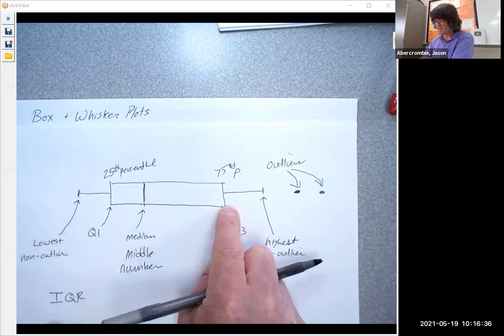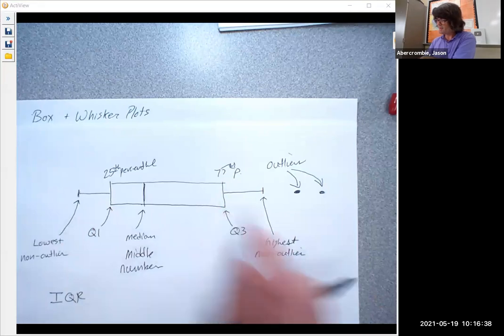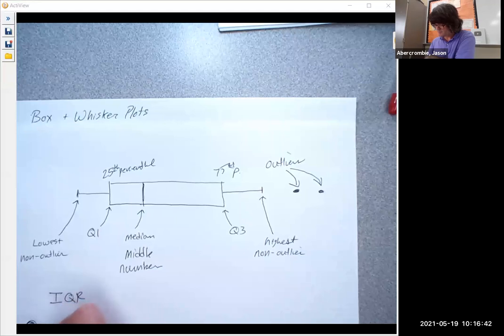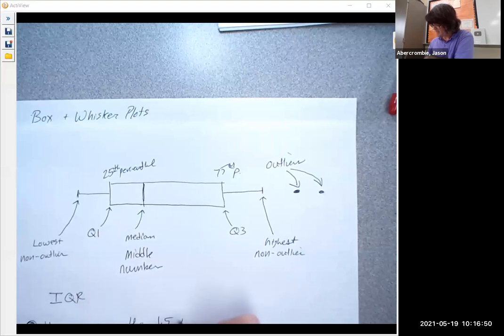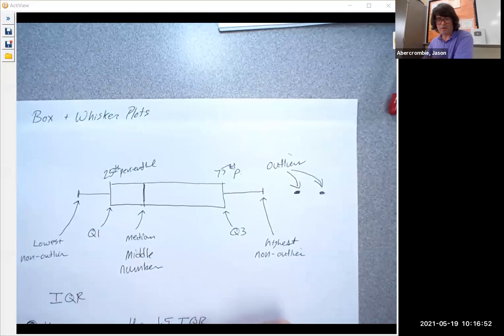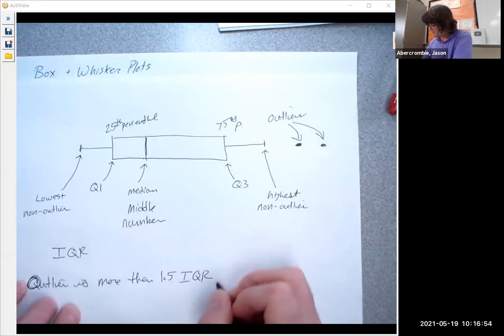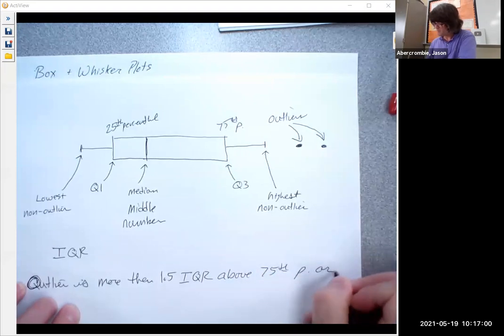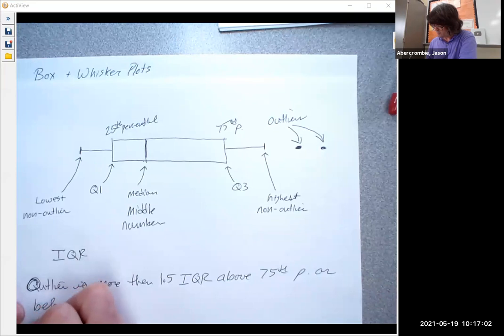An outlier is more than 1.5 IQR above 75th percentile or below 25th percentile.